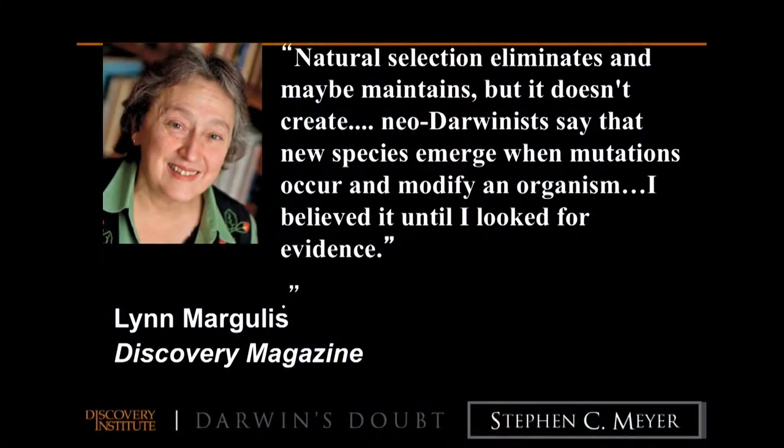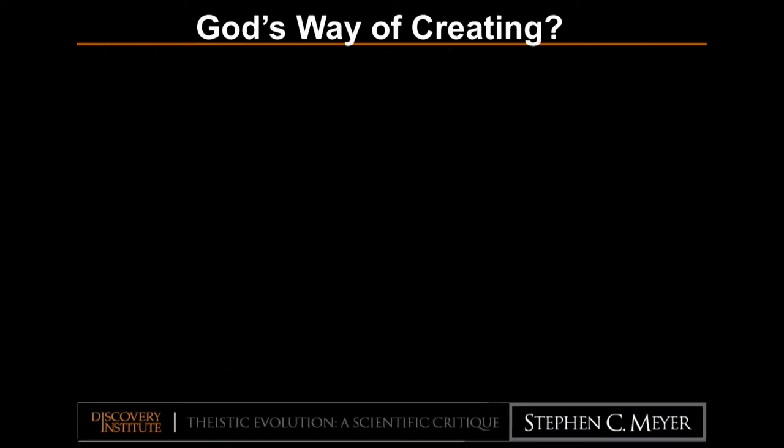Those are the scientists wondering whether the Darwinian mechanism is actually creative. Lynn Margulis has said: natural selection eliminates and maybe maintains, but it doesn't create — it doesn't generate anything fundamentally new. Neo-Darwinists say new species emerge when mutations occur and modify an organism. 'I believed that,' she said, 'until I looked for evidence.' So this is the real nub of the issue.